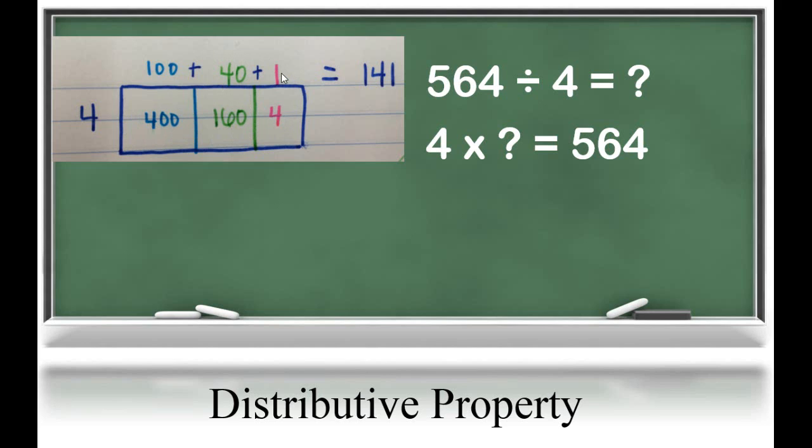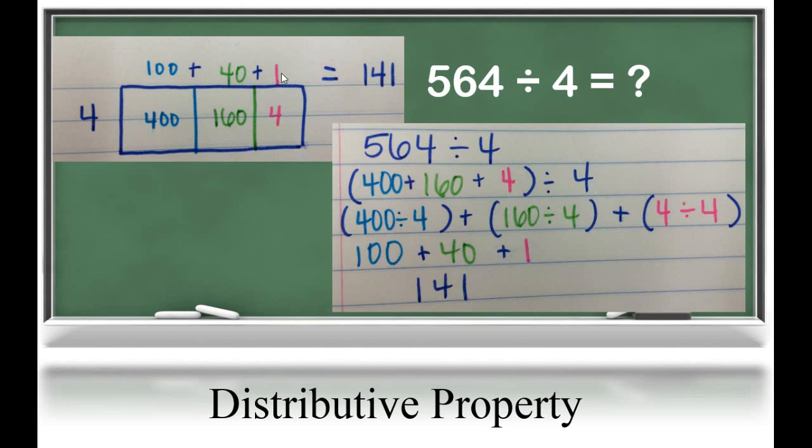Now, it's important to know that students can break apart the dividend any way that they choose. Just like in multiplication, the distributive property needs to be recorded in expressions using parentheses. Let's look at what that would look like. We have 564 divided by 4. In this model, we broke 564 into 400 plus 160 plus 4.